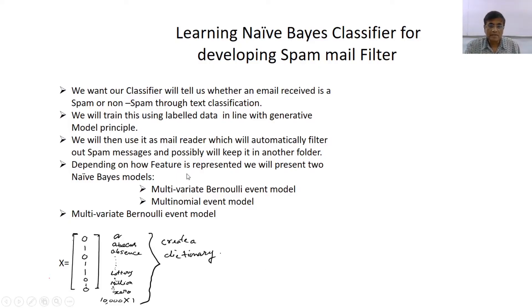This is another generative model. Let us see how the classifier is designed and how it works. Basically depending on how features are represented, there are two models which we will study. One is known as multivariate Bernoulli event model, another is known as multinomial event model.